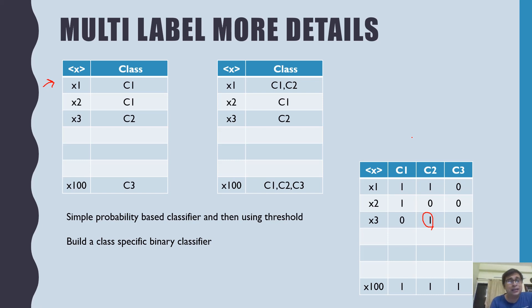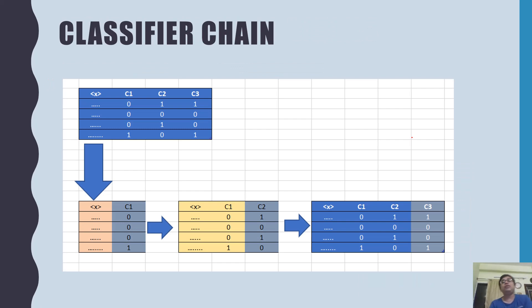Another approach is called classifier chain. Here what happens is that first we take only the independent variables and then we try to predict C1. Once C1 is predicted, we take this also as an independent variable and use this to try to predict C2. Similarly, when you move to the next level, you take all of these as the independent variable and you try to predict C3. However, you do understand that this is only possible when there is a relation between them, that some way C1 should cause C2, and some way C1 and C2 both should cause C3.